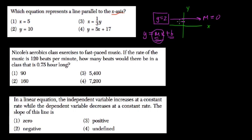mx is canceled out, again, because the slope is 0. m is 0. So here, we'll pick choice 2, where y equals 10.